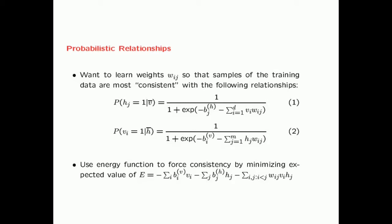In order for these samples to be as consistent as possible, we use an objective function—an energy function which tries to force consistency by minimizing the expected value of E. Note that all V_Is and H_Js are random variables, so we are learning weights to minimize the expected value of this expression. In this energy function, you have W_IJ times V_I multiplied by H_J. If W_IJ is highly positive, the energy function will be minimized—highly negative—only when V_I and H_J tend to take on the same values, consistent with high weights implying higher correlations among states.